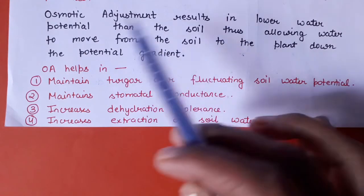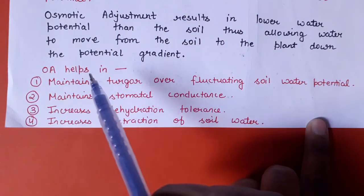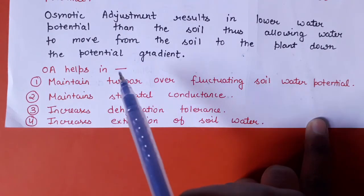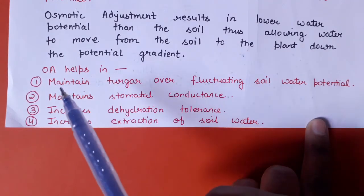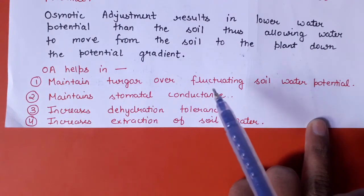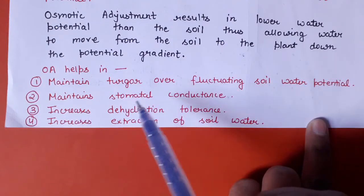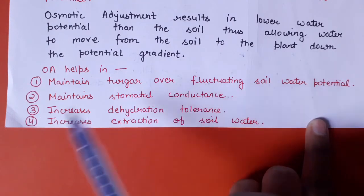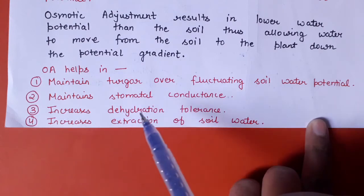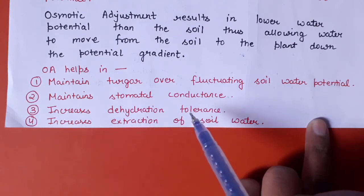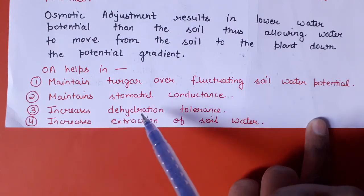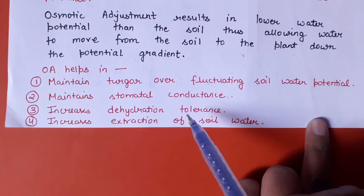That is what we have understood. Osmotic adjustment basically helps to maintain turgor over fluctuating soil water potential. It also maintains stomatal conductance and increases the dehydration tolerance, so plants can survive in water deficiency conditions.